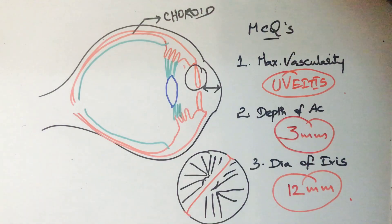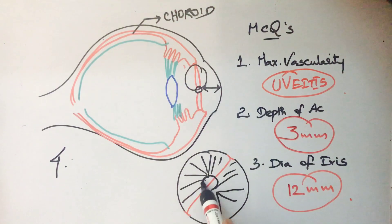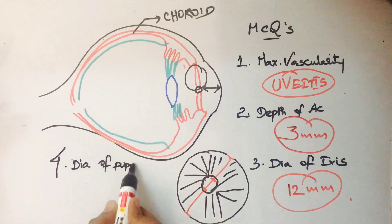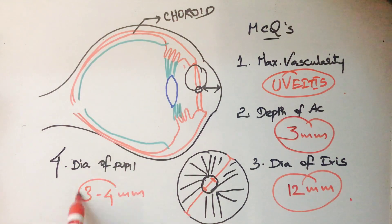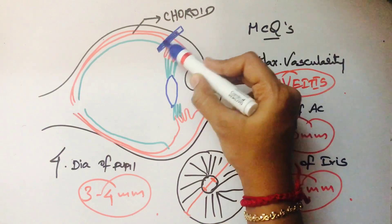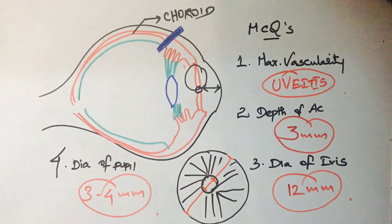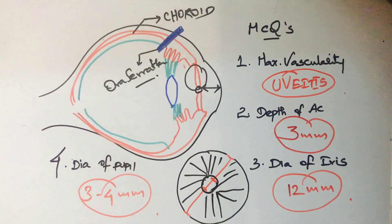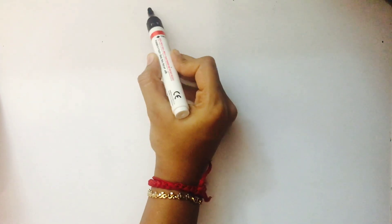There is an aperture present in the midline called the pupil. The diameter of the pupil is 3 to 4 millimeters. The point that is the junction between the choroid and ciliary body - or the point where the retina ends - is called the ora serrata.